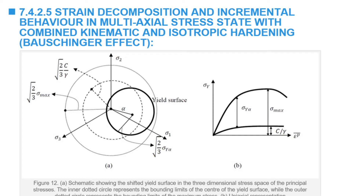In the principal component 3D vector space, this model is represented by the same von Mises cylinder. The radius of the cylinder is still equal to square root of 2 over square root of 3, multiplied by sigma yield alpha.